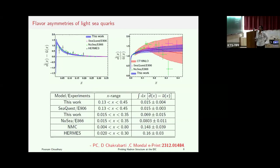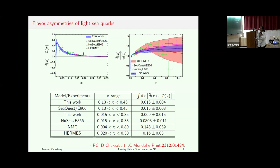Now let us focus on our target — the flavor asymmetry in the light sea quarks. The asymmetry is mainly expressed as the difference D-bar minus U-bar, but there are other ways as well: the ratio D-bar by U-bar, and D-bar minus U-bar divided by D-bar plus U-bar. These results are for D-bar minus U-bar, compared with our results alongside the CTEQ and NuSea results, which are two leading groups providing updated results about flavor asymmetry in light sea quarks. Our results for D-bar minus U-bar are in good comparison with both NuSea and CTEQ.